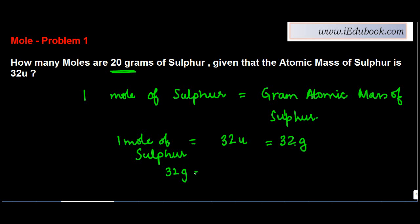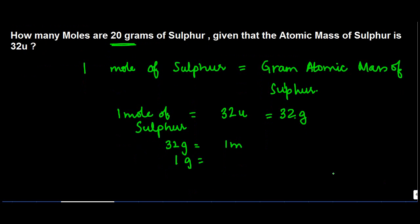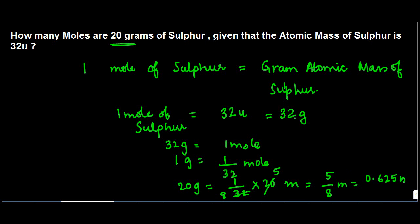So 32 grams equals one mole. One gram will be equal to 1 by 32 moles. And we have 20 grams. So 20 grams will be equal to 1 by 32 into 20, or in other words, 5 by 8 mole, which can be written as 0.625 mole.